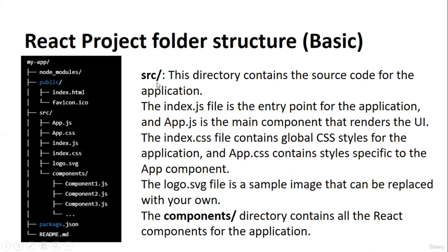The most important directory is 'src', which contains the source code of our application. Inside, index.js is the entry point of the application — the application starts from this file. App.js is the main component responsible for rendering the UI. In upcoming lectures we'll go deep into each, but for now we're understanding the structure. When we do practicals, you'll understand what index.js and App.js contain.